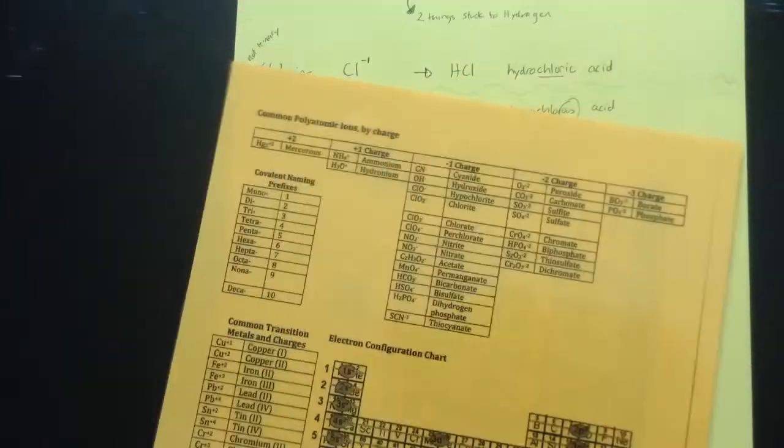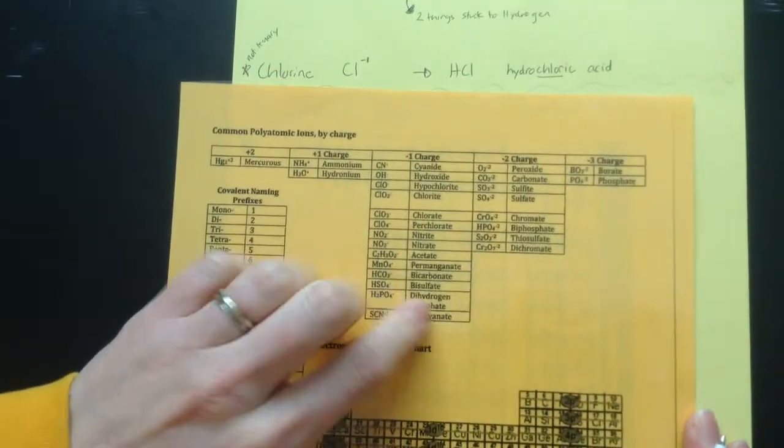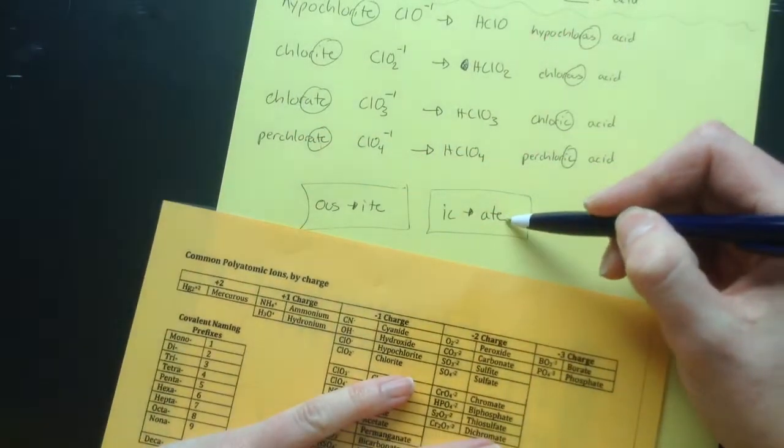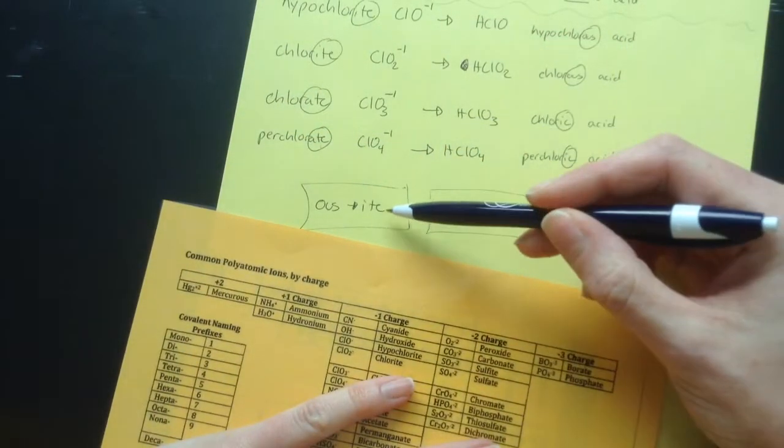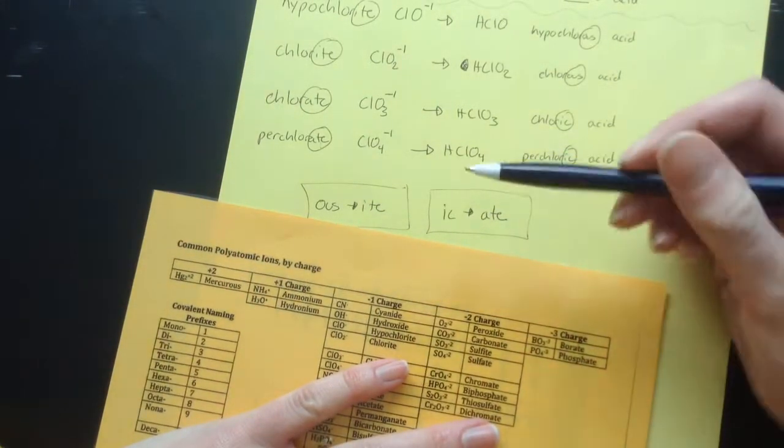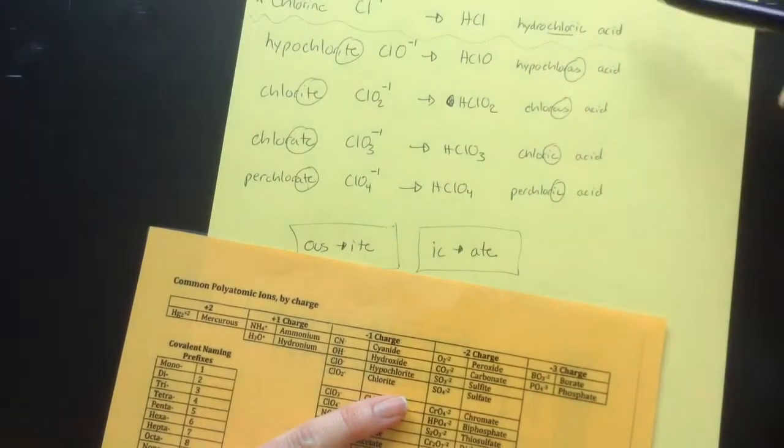So when you have your ternary acids, which are these guys here, if it ends in ic, then you change the end to ate and add acid. If it ends in ite, you change the end to ous and add acid. And if it ends in ide, you would add hydro, and then ic, and then acid.